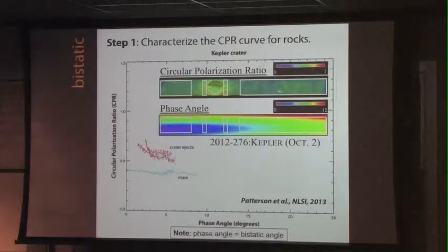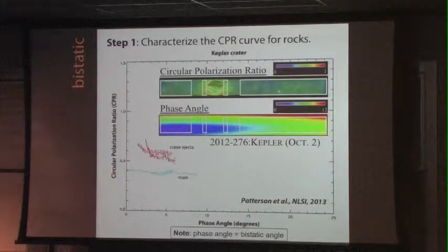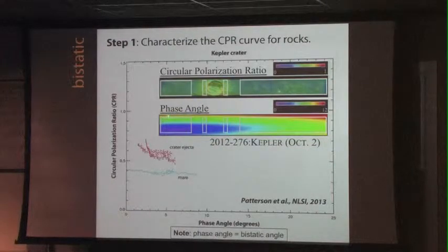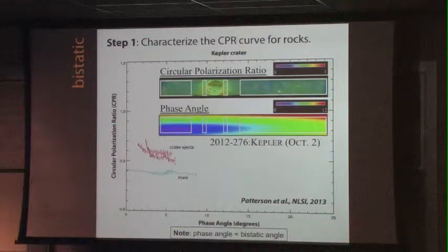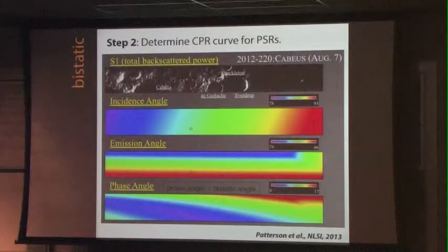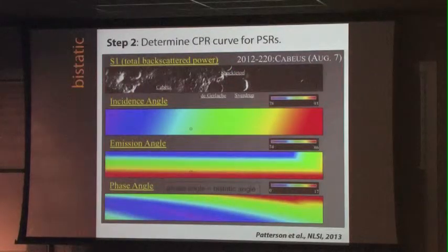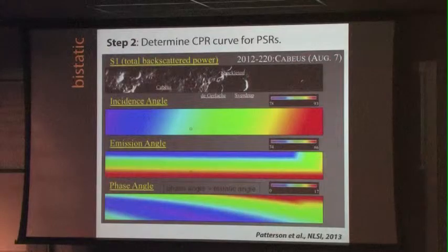The first step is to characterize that CPR-versus-beta-angle curve for rocks — this has never been done before. These are actually the first bistatic images of another world. Kepler crater, though nowhere near the poles, has a nice blocky ejecta blanket. Work by Wes Patterson examines the crater at different bistatic angles to characterize what this curve looks like for ejecta and also for mare surfaces. When we eventually get images of the lunar poles, we can see if they look like rocks or whether they match the theoretical prediction for water ice, which should drop off very quickly.